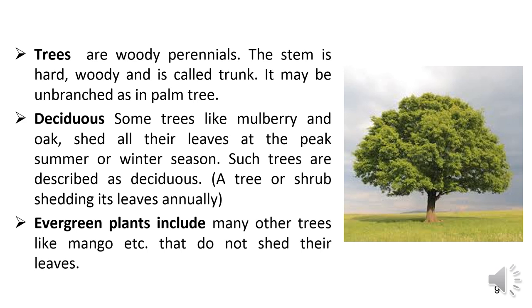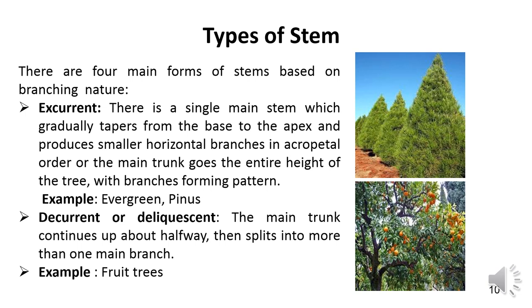Trees are woody perennials; the stem is hard and woody and is called the trunk. It may be unbranched, as in the case of the palm tree. Some trees like mulberry and oak shed all their leaves at peak summer or winter season — such trees are described as deciduous, meaning a tree or shrub that sheds its leaves annually. Evergreen plants have leaves throughout the year and are always green — many trees like mango do not shed their leaves.